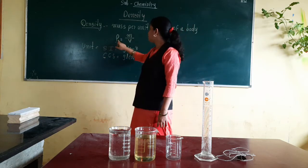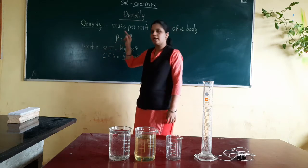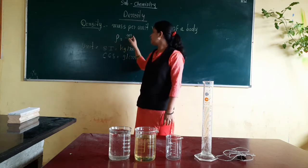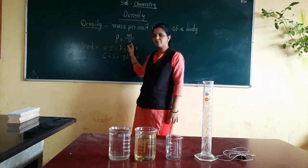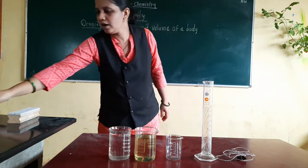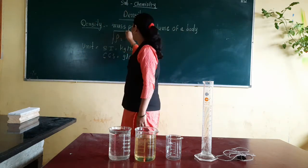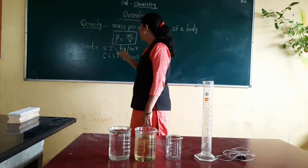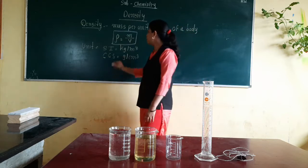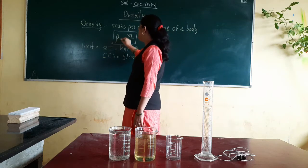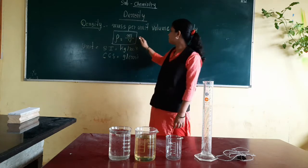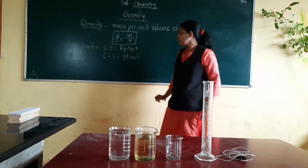Rho — this symbol is known as rho. Density is denoted by this symbol, and the formula of density is mass per unit volume.